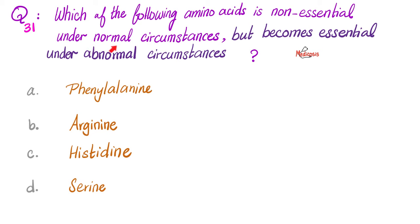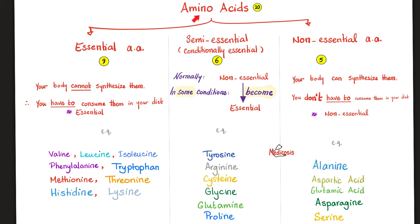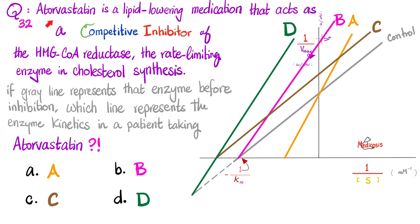Next: which amino acid is non-essential under normal circumstances but becomes essential under abnormal circumstances? Please pause. The answer is arginine, because arginine is semi-essential or conditionally essential. We classify amino acids into 9 essential, 6 semi-essential (conditionally essential), and 5 non-essential — totaling the 20 proteogenic amino acids. Arginine is normally non-essential but can become essential in certain disease states.